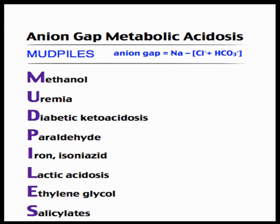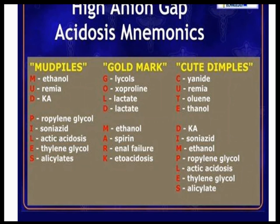A helpful mnemonic for increased anion gap metabolic acidosis is MUD PILES — Methanol, Uremia, Diabetic acidosis, and so on. Other mnemonics like GOLD MARK and CUTE DIPPLES are also available. Use whichever is easiest for you to remember.